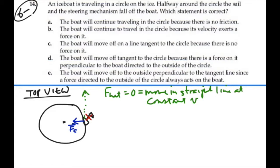So, the boat will continue traveling in a circle because there is no friction. That's not true. B, the boat will continue to travel in a circle because its velocity exerts a force on it. Not true. No net force in the horizontal direction. It will move in a straight line.